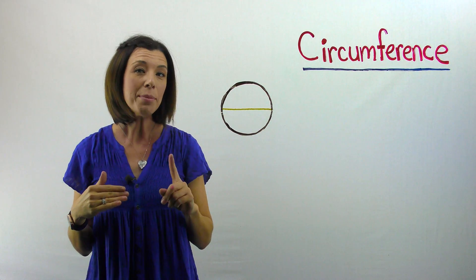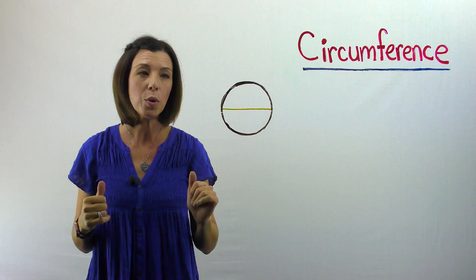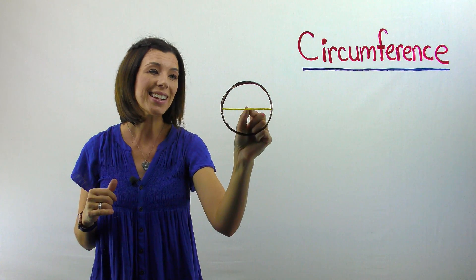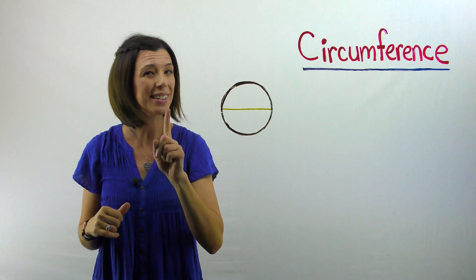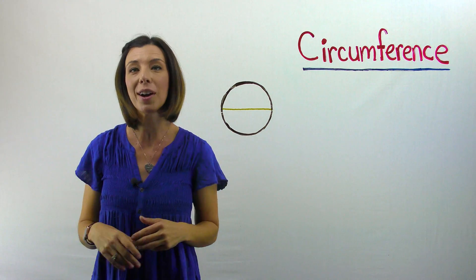Remember, the diameter goes all the way through my circle from one side to the next, and going through the center point. This is not a radius, which is only half of the diameter.